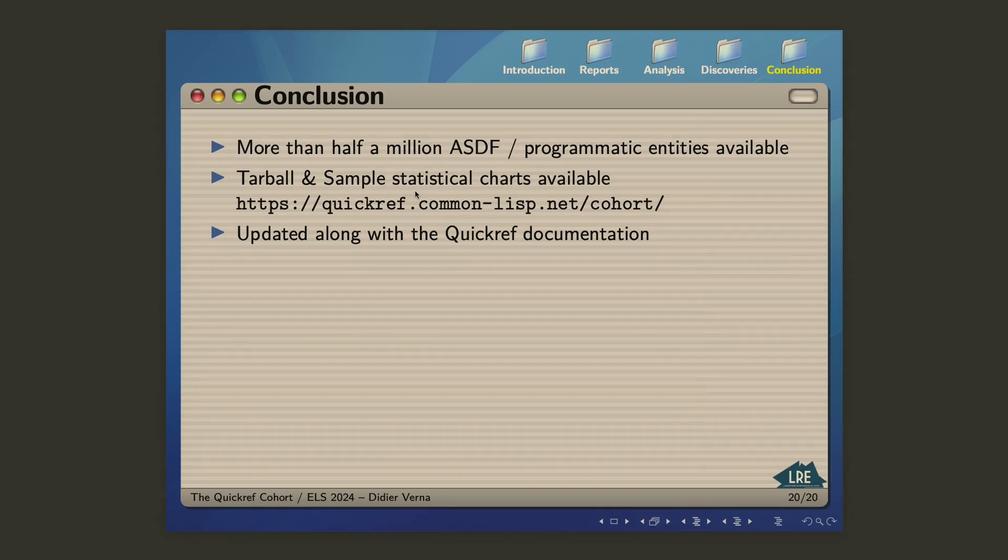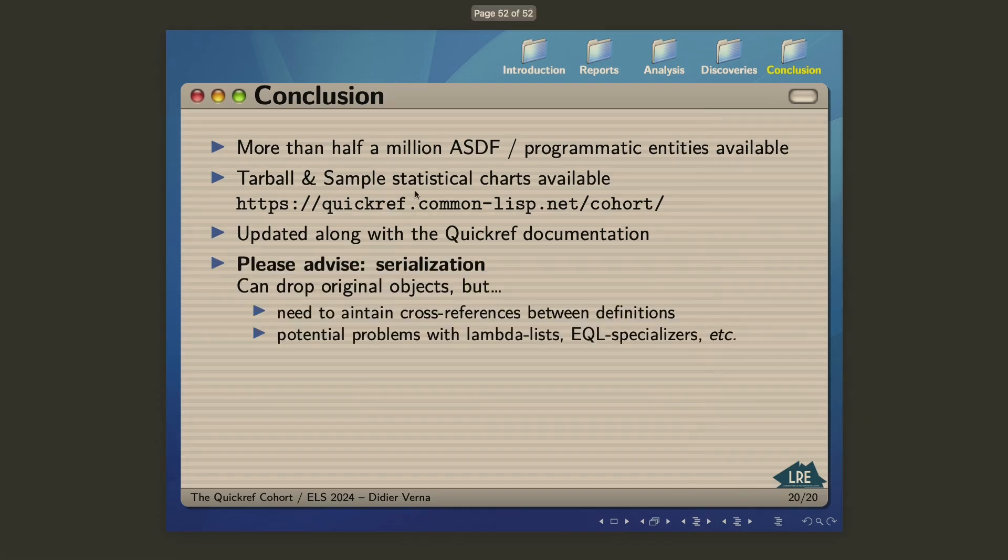But it's still in beta grade because there is something, and I would like your help on this. There is something which is not done yet, which is a serious dump. Actually, as of today, I've never done serialization before, so I can obviously dig into that and do it myself, but I'm pretty sure that many of you have some experience in that, and if you want to save me some time, I would like someone to point me in the right direction.